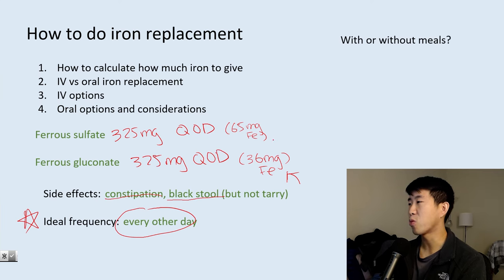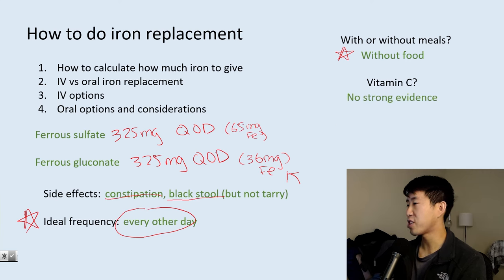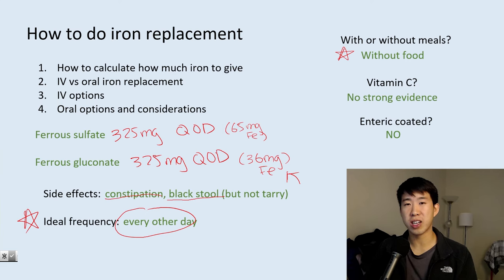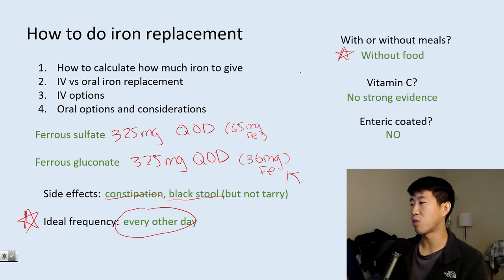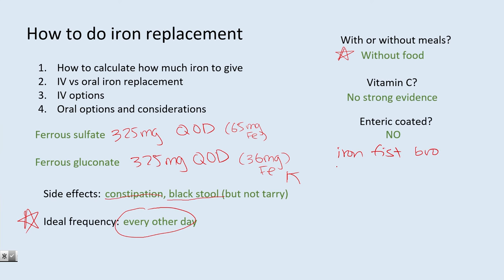Patients should take iron without food, as fasting improves absorption. Taking iron with vitamin C is commonly recommended, but the evidence for this is not that strong. Avoid enteric-coated iron formulations — these travel further down the intestinal tract past the duodenum, where iron is primarily absorbed. Using the mnemonic 'Iron Fist Bro': iron is absorbed in the duodenum, folate in the jejunum, and B12 in the ileum. Enteric-coated iron bypasses the main absorption site, reducing efficacy.